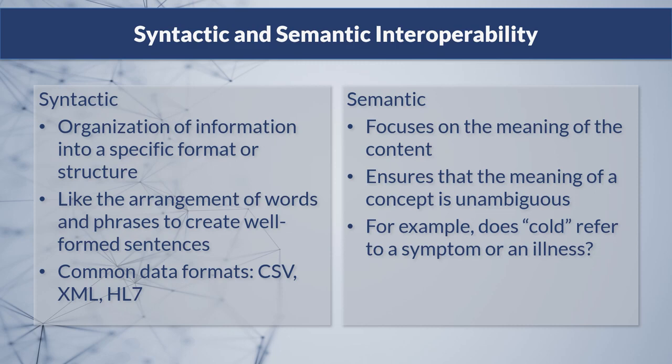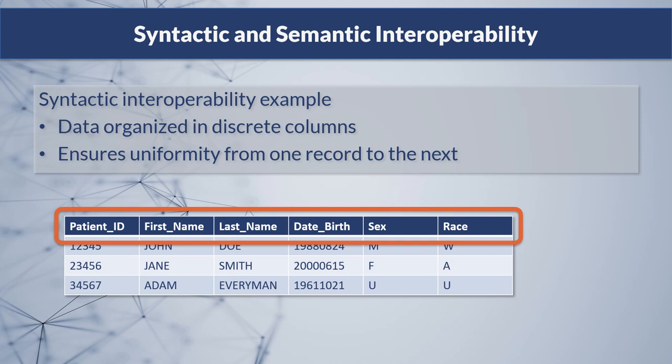Let's look at an example of how these concepts apply to public health. Probably the simplest example of syntactic interoperability in public health would be an Excel spreadsheet. Data are organized into discrete columns, and we should have uniformity in what is sent in each column from one record or row to the next. The top row of the spreadsheet lists the data elements included in the dataset in the order that they should be sent. Syntactic interoperability assumes that the sender and receiver have agreed upon this format to organize the data that will be shared.